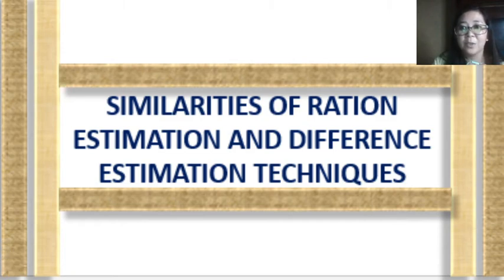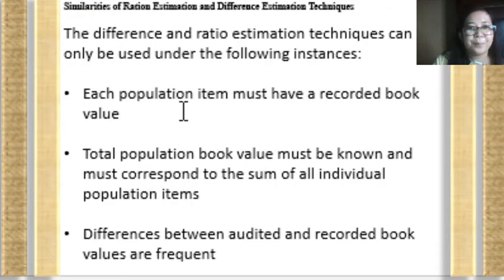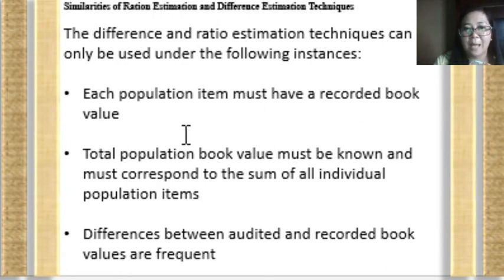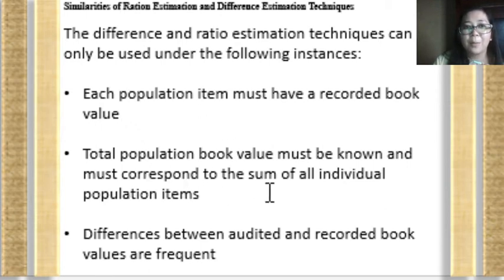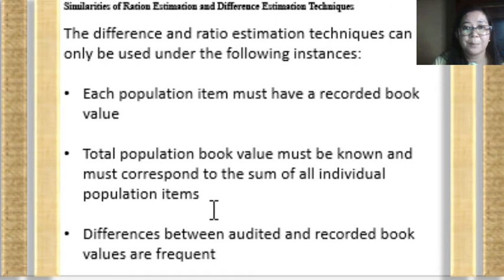The ratio estimation and difference estimation techniques can only be used under the following conditions: each population item must have a recorded book value; the total population book value must be known and must correspond to the sum of all individual population items; and differences between audited and recorded book values must be frequent.